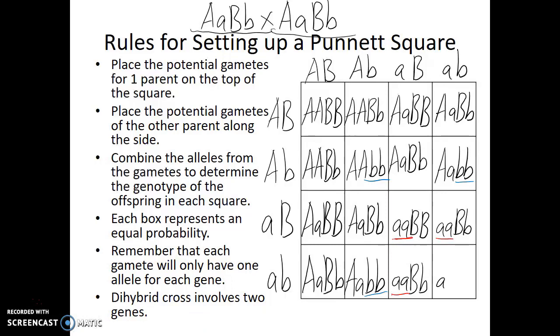And the very last square will be recessive for both: little a, little a, little b, little b. Recessive for A and recessive for B.